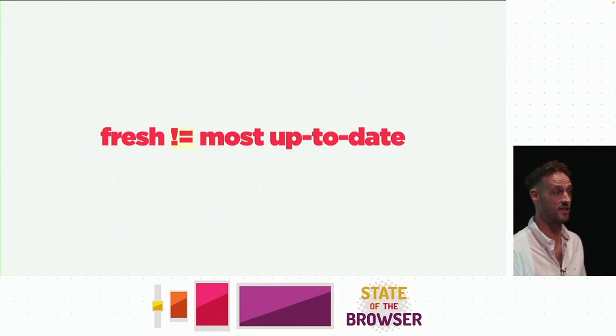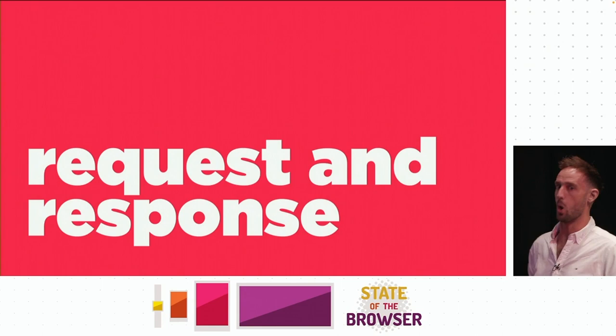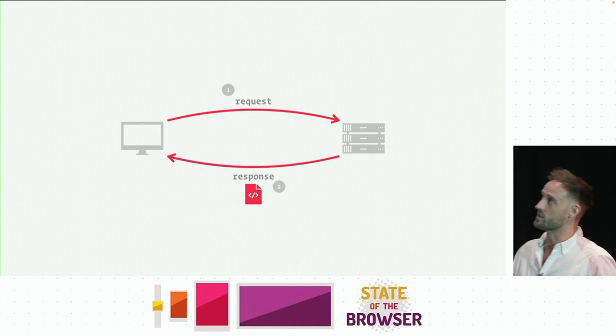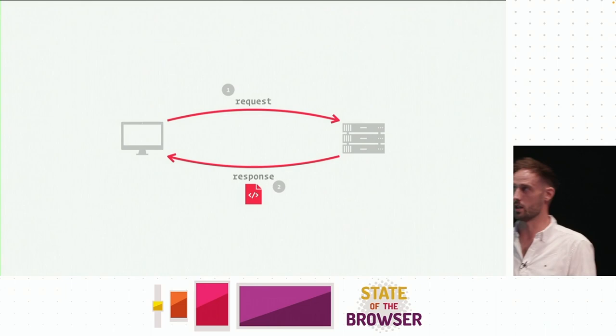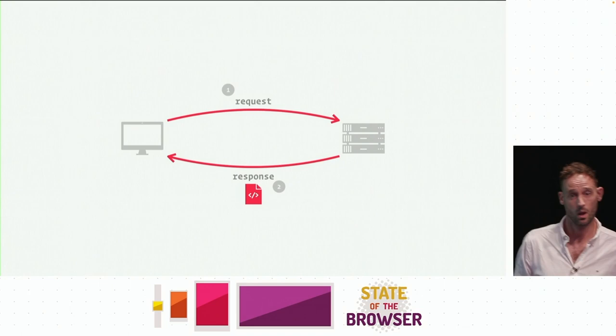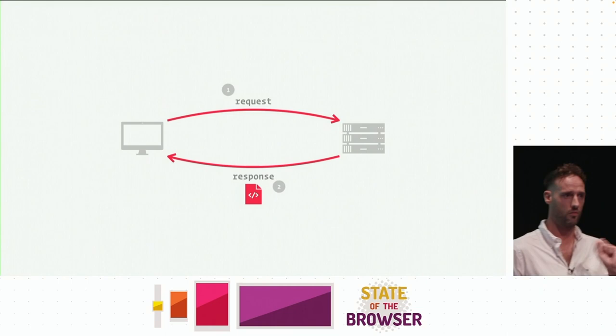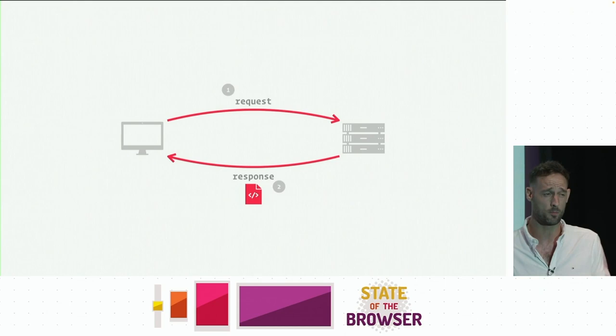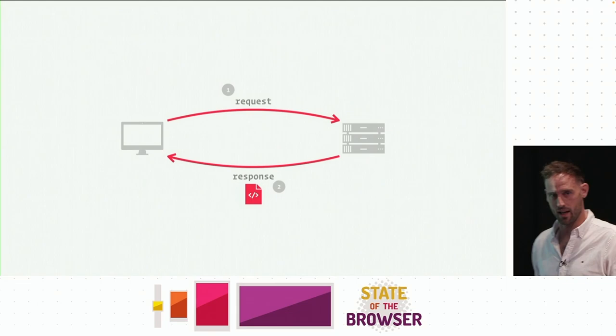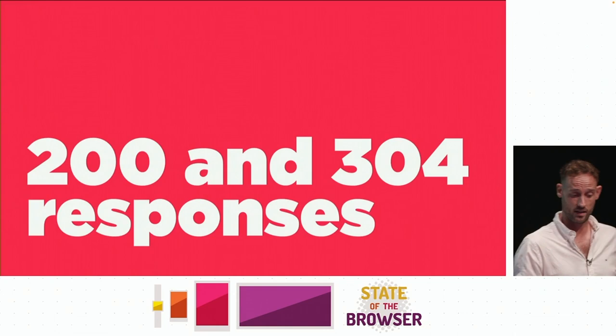Next concept: request and response. A request-response lifecycle is very simple — a desktop computer asks for a file from a server on the internet and a response comes back. But a response isn't the same as a file. A response could be a 404, which is literally the absence of a file. So through the talk, instead of saying the word 'file', I'm going to say the word 'response'.